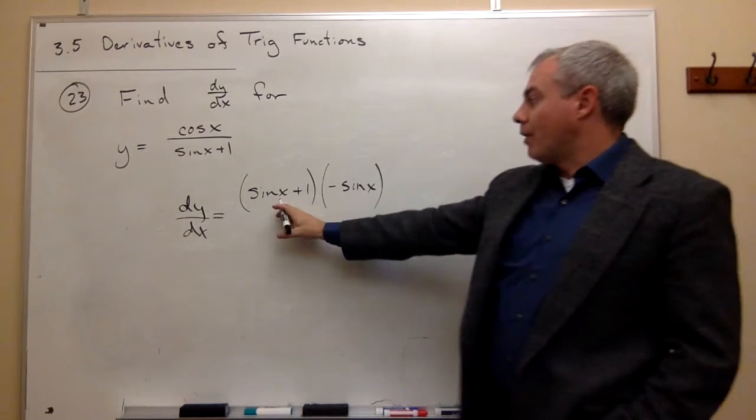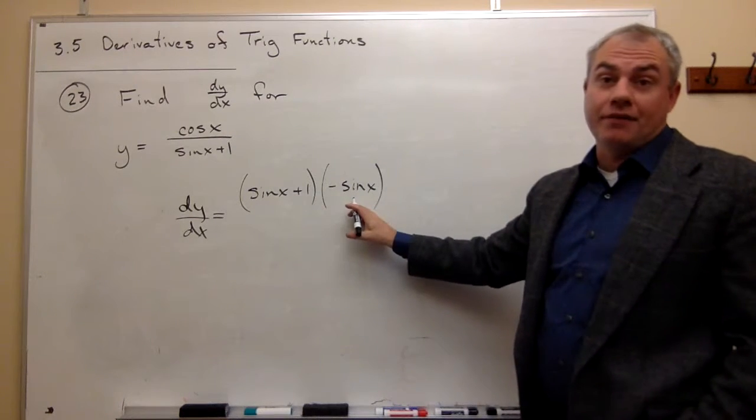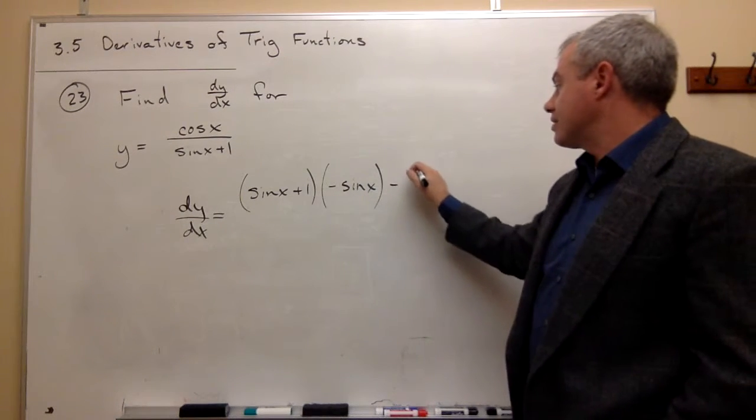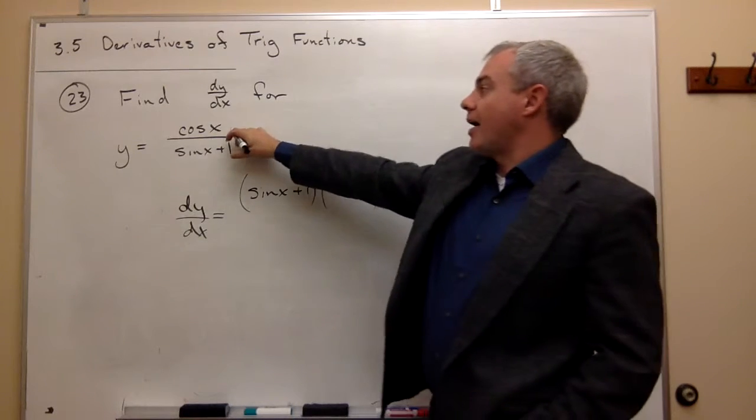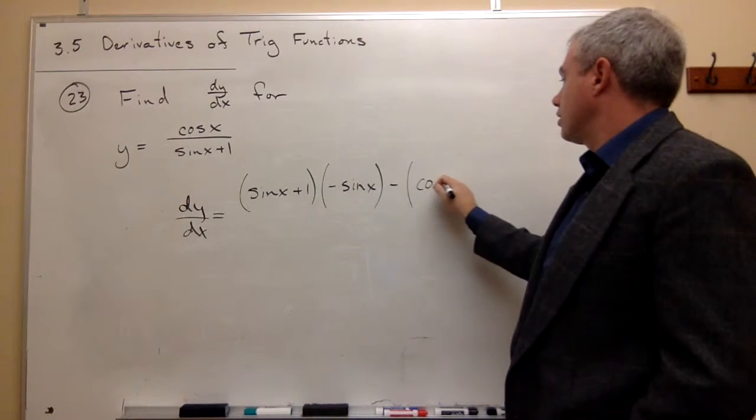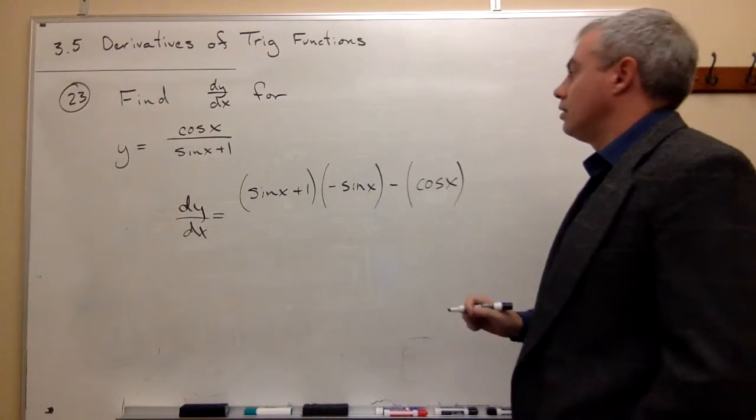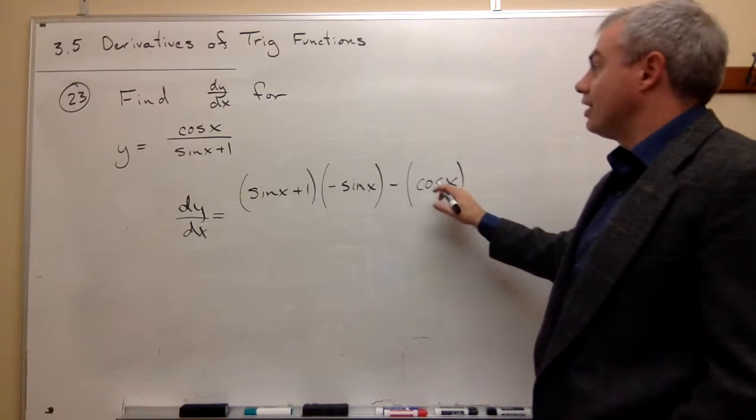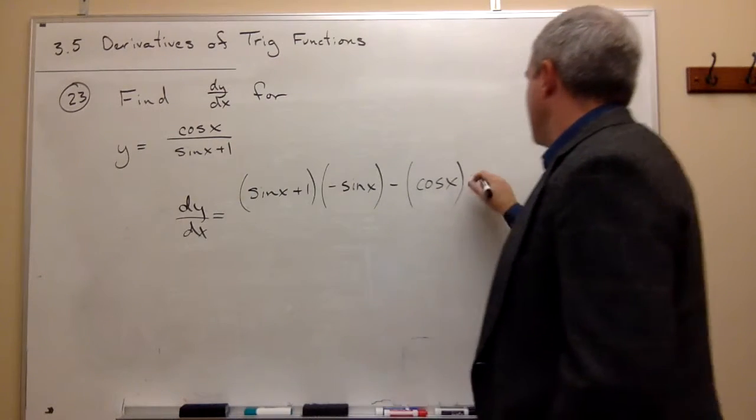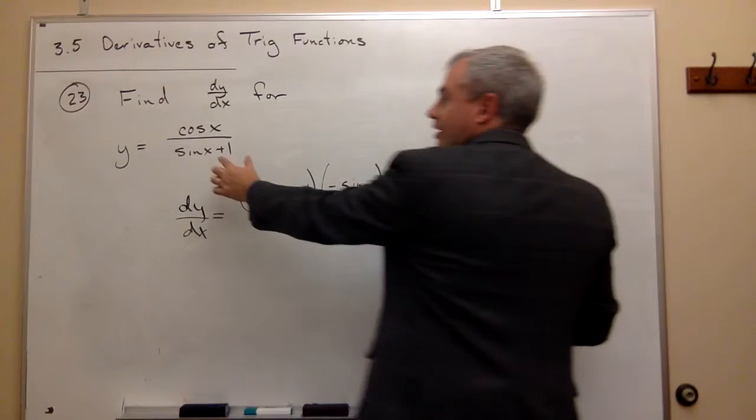So I have the bottom times the derivative of the top minus, now I write down the top and leave it alone, cosine of x, times the derivative of the bottom. And so I want to multiply by the derivative of what's on the bottom.